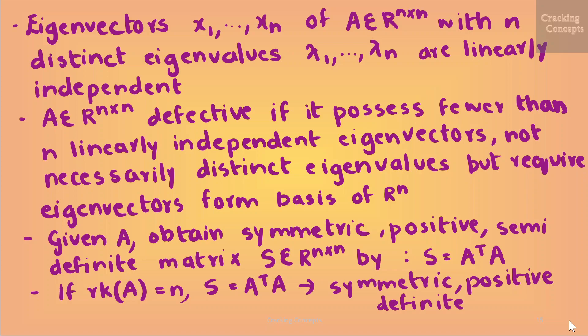The eigenvectors x1, ..., xn of a matrix A with n distinct eigenvalues λ1, ..., λn are linearly independent. The theorem states that a square matrix A is defective if it possesses fewer than n linearly independent eigenvectors. A defective matrix cannot have n distinct eigenvalues, as distinct eigenvalues will have linearly independent eigenvectors.